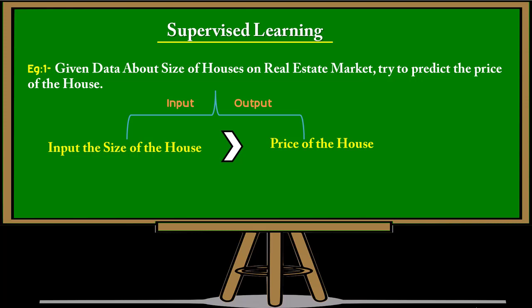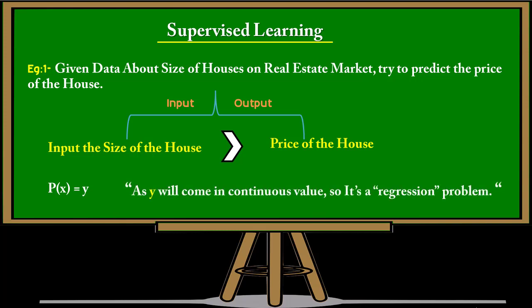We input x, which is the size, and we get y, which is the price of the house. We know what our output should look like. The price of the house will be in a continuous value, so we can think of y as coming in continuous values. This makes it a regression problem, which is one of the supervised learning problems.